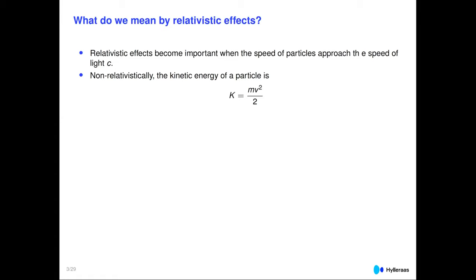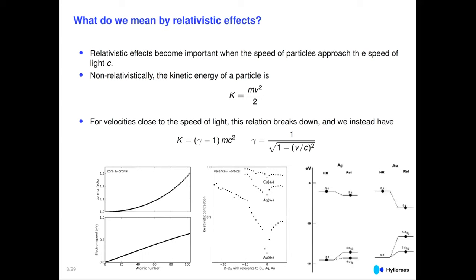So we need to take these relativistic effects into account, which means introducing the Lorentz factor that quantifies the magnitude of this effect. This is illustrated as a function of nuclear charge for the core 1S orbital. As we approach nuclear charges of around 100, the Lorentz factor will be about 1.3, and the speed of the electron is approaching or passing half the speed of light.